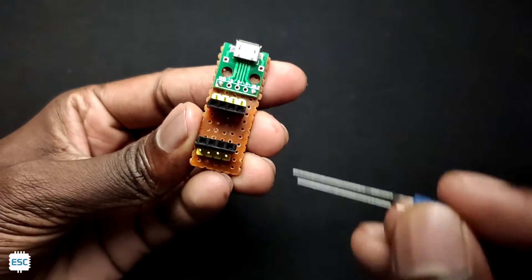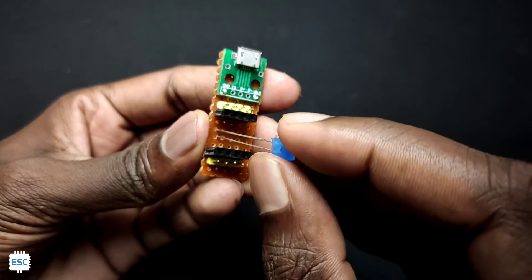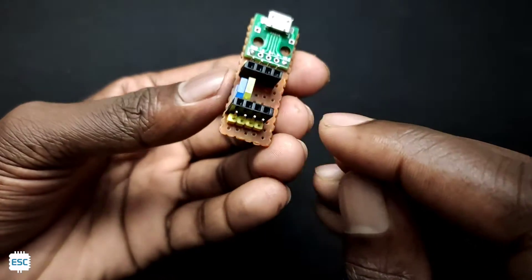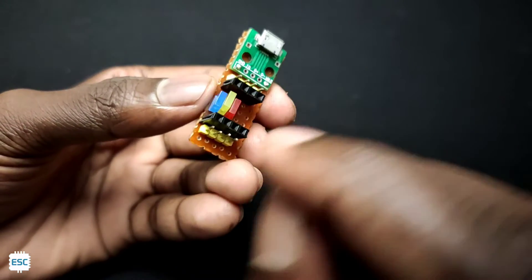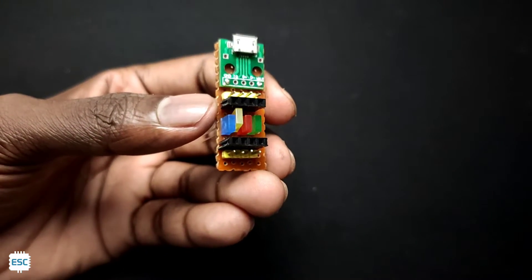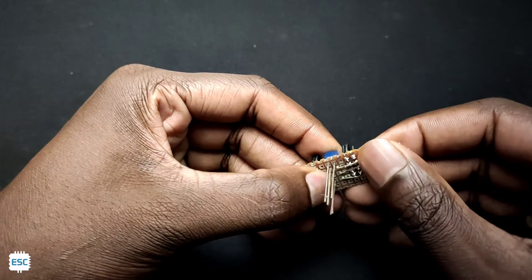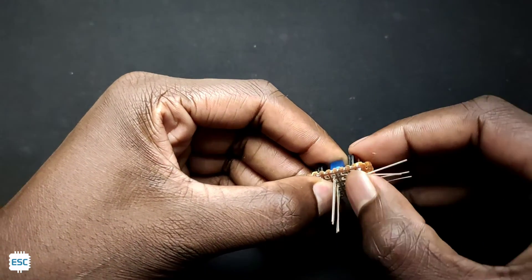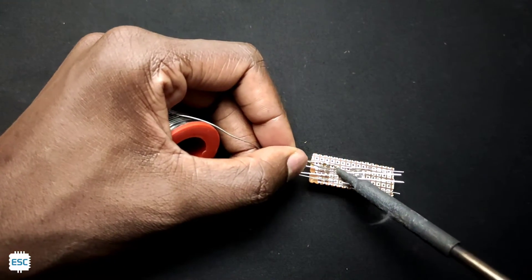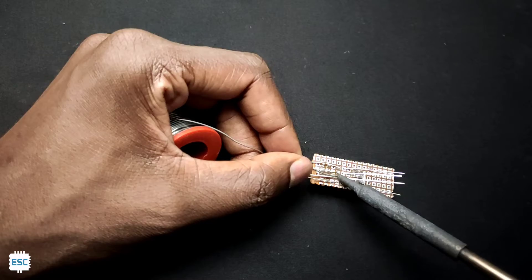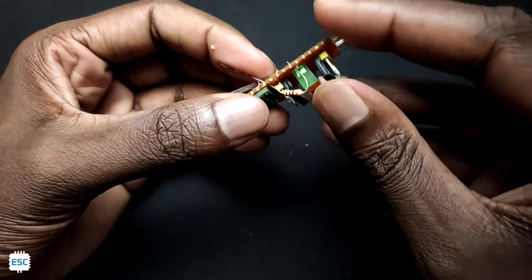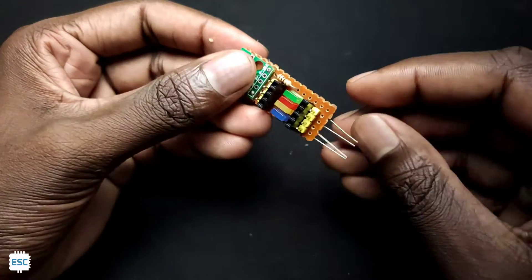Next, I placed 4 LEDs between the header pins and soldered it. Finally, I added a 1 kilohm resistor to the circuit.